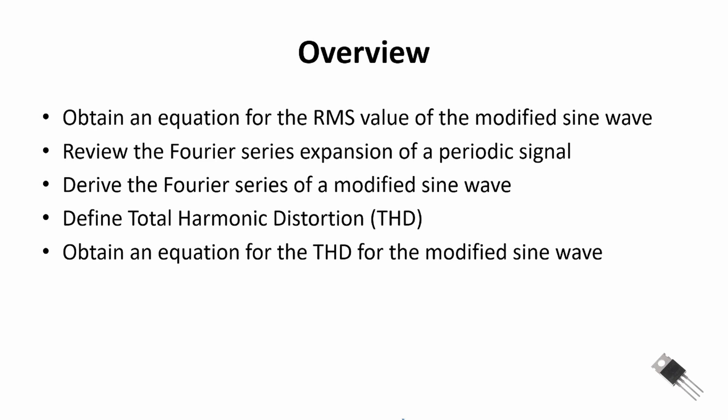First we're going to start with the RMS value of the modified sine wave. Then we're going to review the Fourier series expansion of a periodic signal. We'll derive the Fourier series of the modified sine wave — though it's a fairly long derivation we'll save that for our in-class session. Then we'll define the total harmonic distortion and obtain an equation for the THD of the modified sine wave.